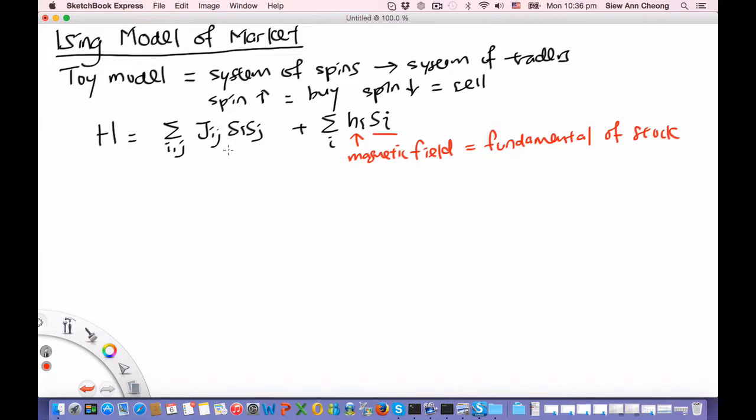Here, in the exchange term, what we have is spin i depending on spin j.